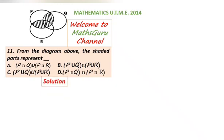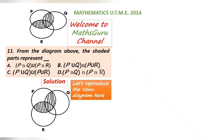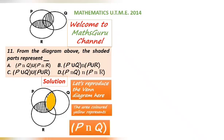Solution. Let's reproduce the Venn diagram here. This way. The area shaded yellow represents P intercept Q. That is what is in P and is also contained in Q.